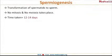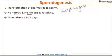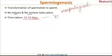The transformation of spermatids to sperms is called spermiogenesis. In this process, there is no cell division — no mitosis, no meiosis — only morphological differentiation occurs. The time taken for this process is 12 to 14 days, and this 12 to 14 days is included within the 72 to 74 days of total spermatogenesis time.